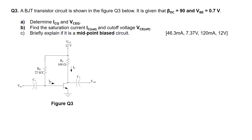I'll move on to question 3 now. For this question, we are again given a base bias transistor circuit. We are also given beta_DC equals 90 and VBE equals 0.7 volts. Part A of this question asks us to find ICQ and VCEQ.